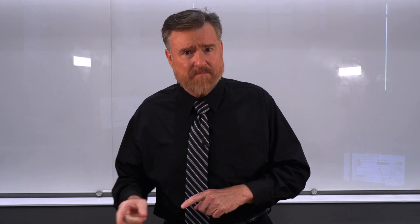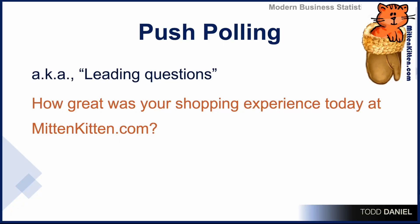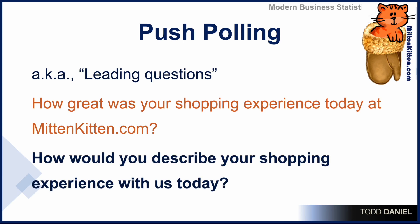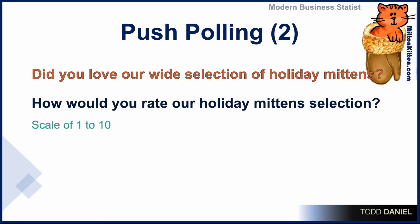However, push polling is sometimes done for less nefarious reasons. For example, how great was your shopping experience today on mittenkitten.com? We are leading or pushing toward an answer about how great the experience was. Here's a much better way of asking that same kind of question: how would you describe your shopping experience with us today? Typically this would be on some kind of Likert scale of 1 to 5 or 1 to 7. Another way that push polls could be asked would be, did you love our wide selection of holiday mittens? Instead, we could ask, how would you rate our holiday mitten selection on a scale of 1 to 10?